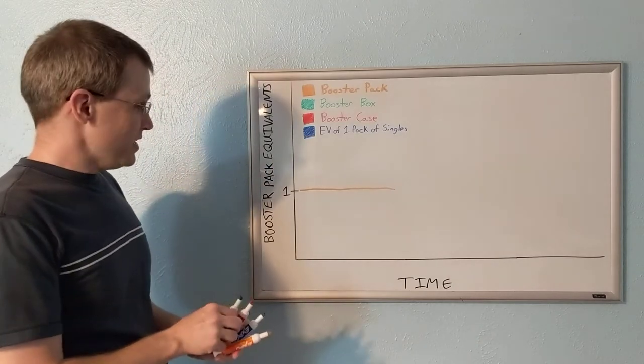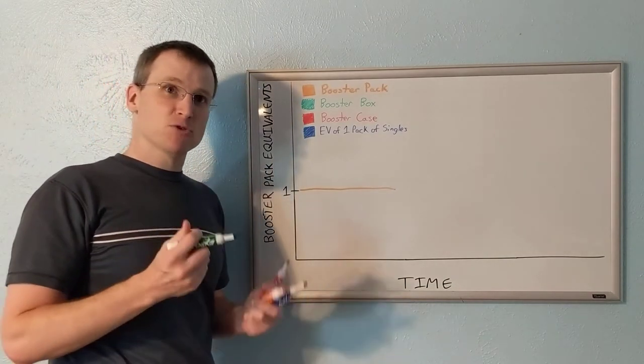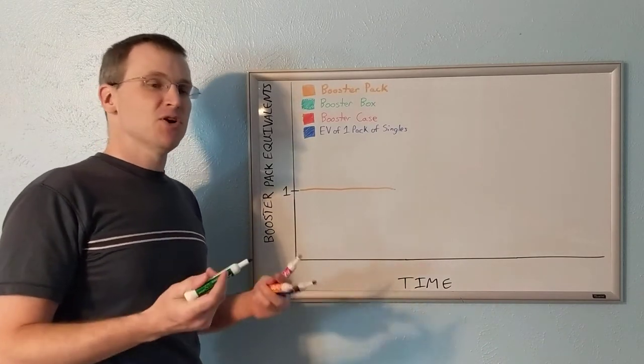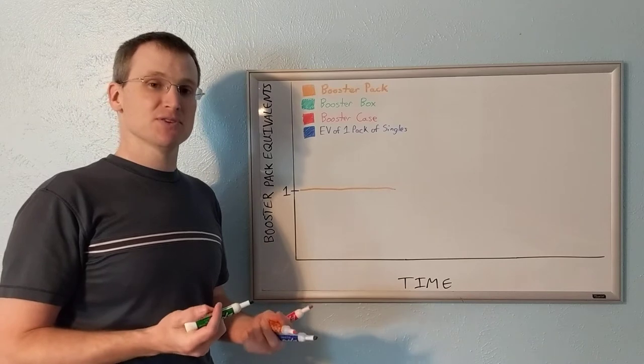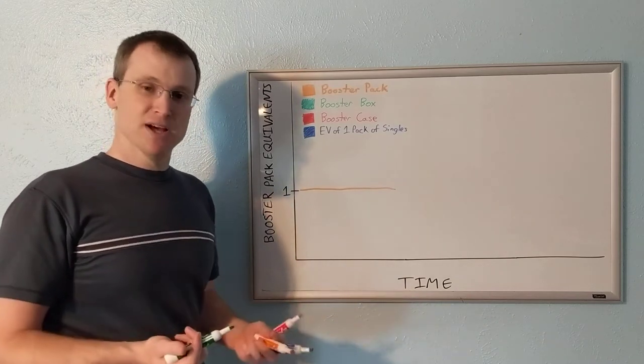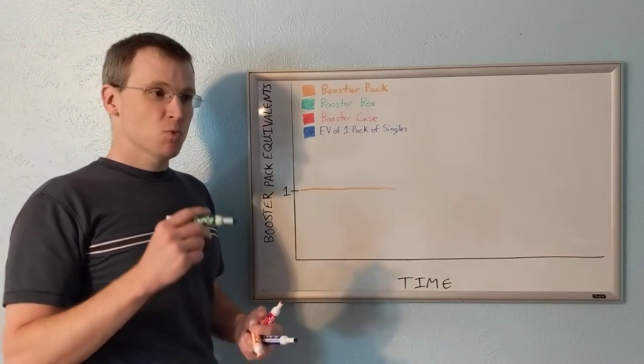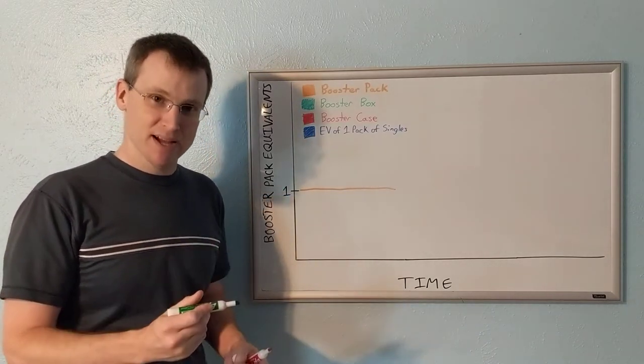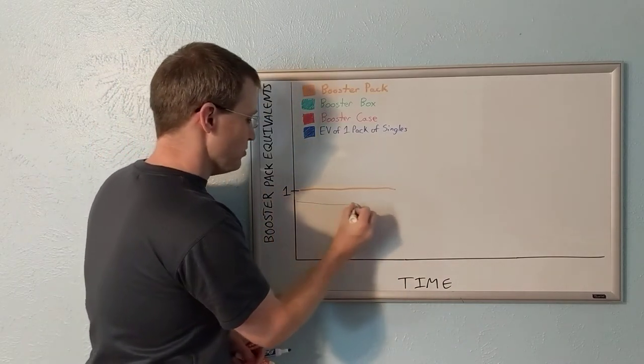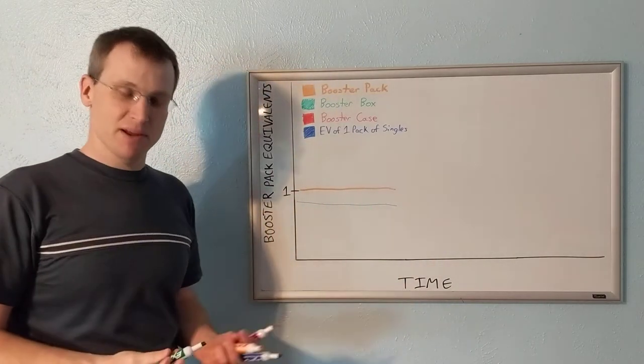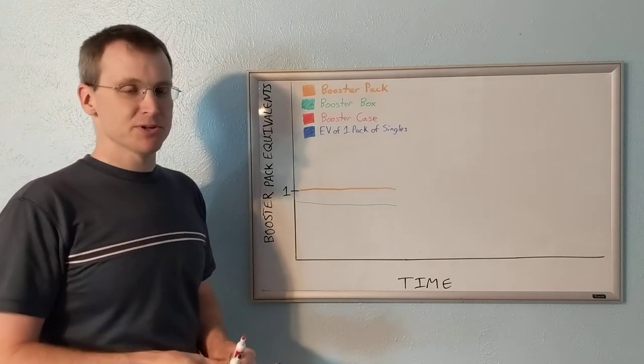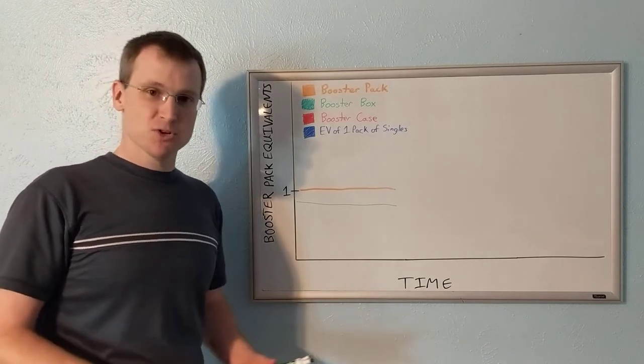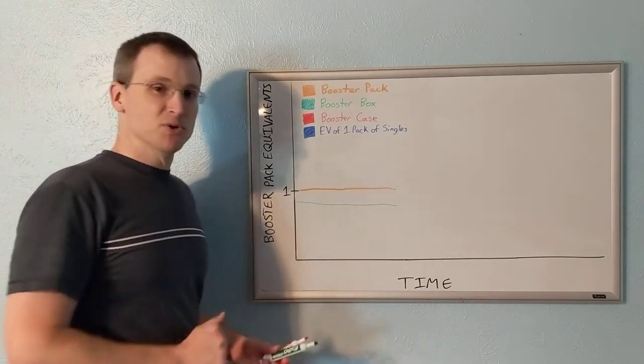The second line we're going to draw is the booster pack equivalent cost of a booster box. So what that means is, even though with Magic there's typically 36 packs in a booster box, flesh and blood there's 24, we're saying what is the cost per pack if we buy a booster box? It's going to be a little lower and it's going to kind of do the same thing. The reason it's a little lower is you get economies of scale on the shipping. Dealers want to give you an incentive to buy more so they can move more volume, so you get a bulk discount.